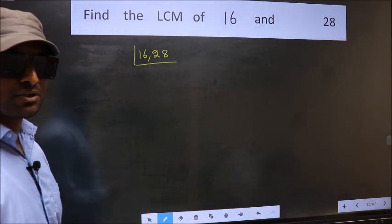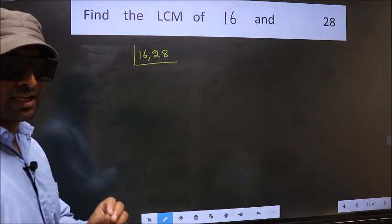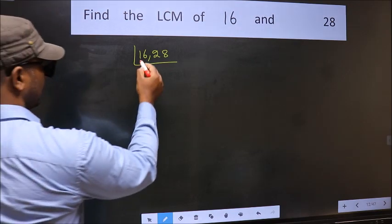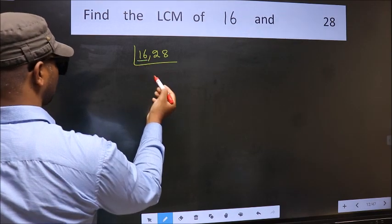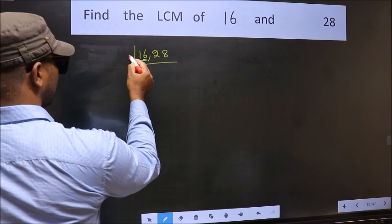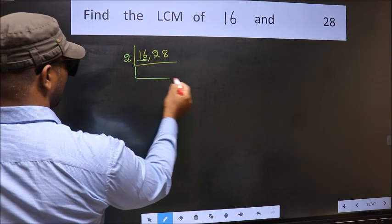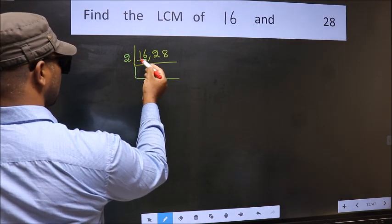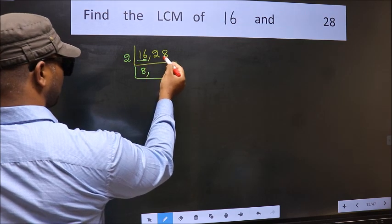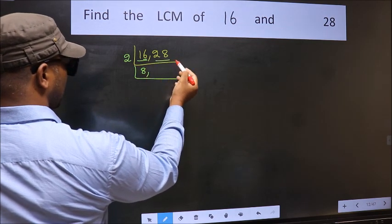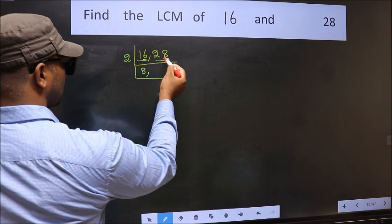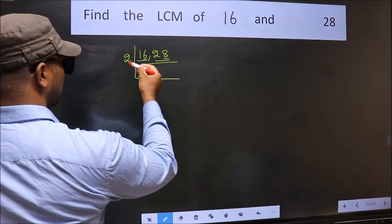Now you should focus on the first number, which is 16. For this number, the last digit is 6, so it is divisible by 2. When do we get 16 in the 2 table? 2, 8, 16. The other number 28 — last digit 8 — is also divisible by 2.